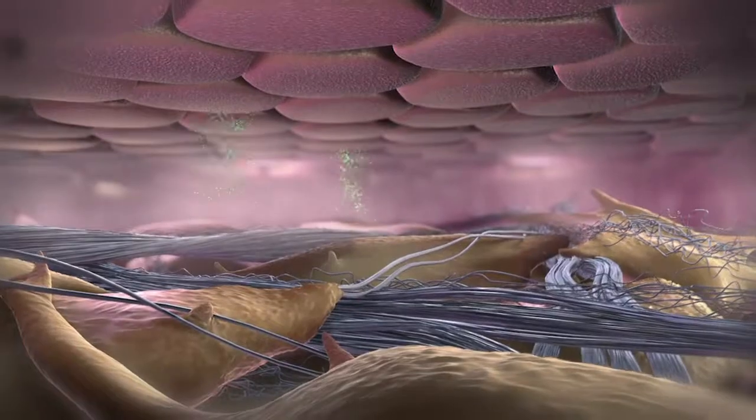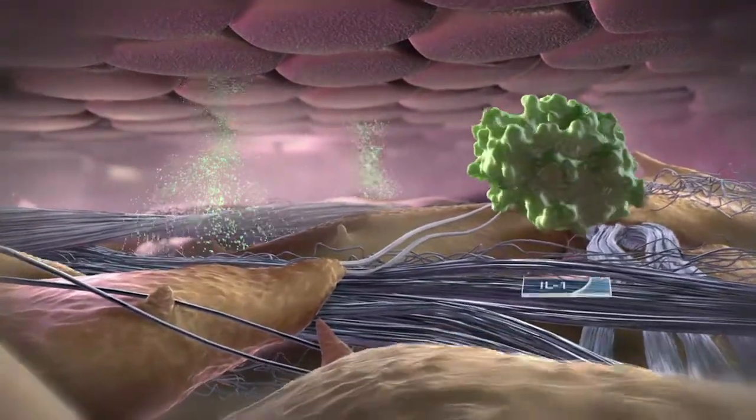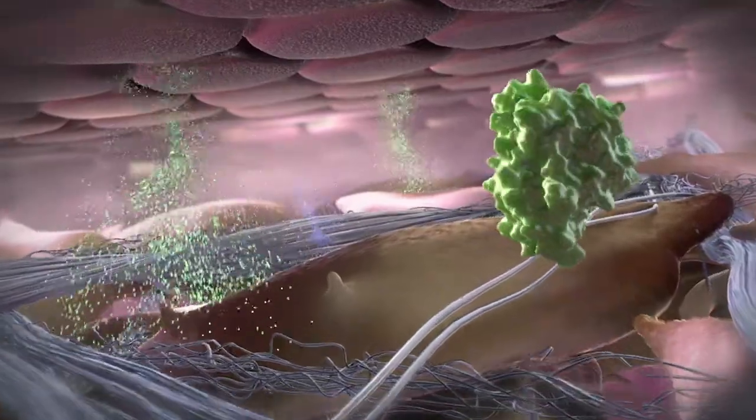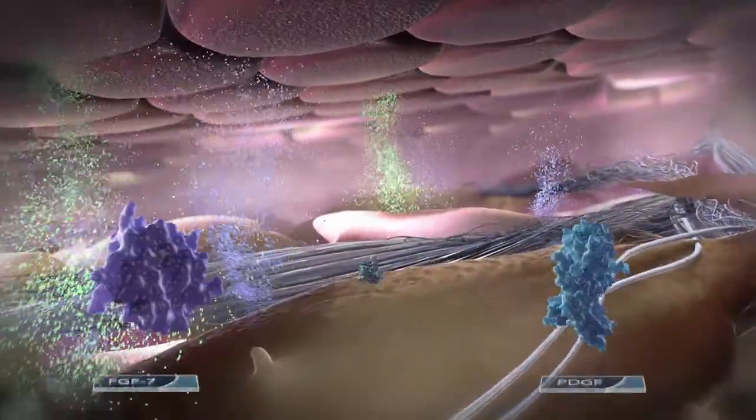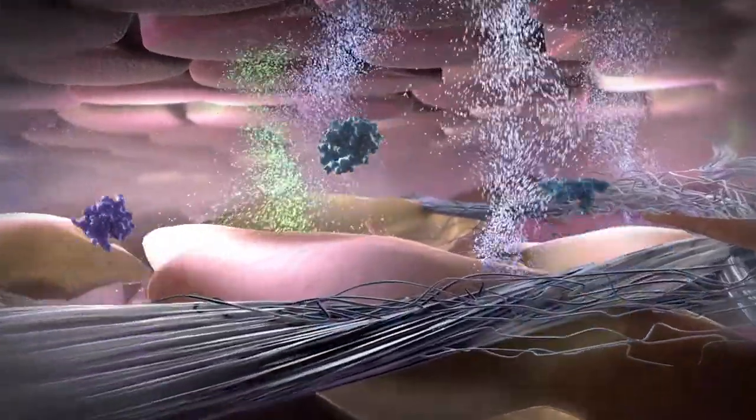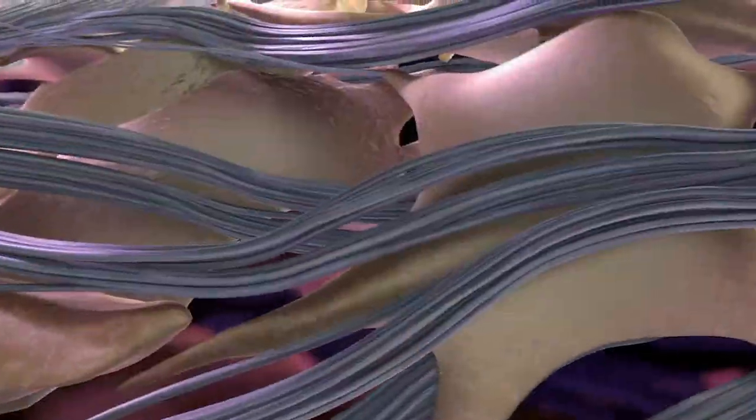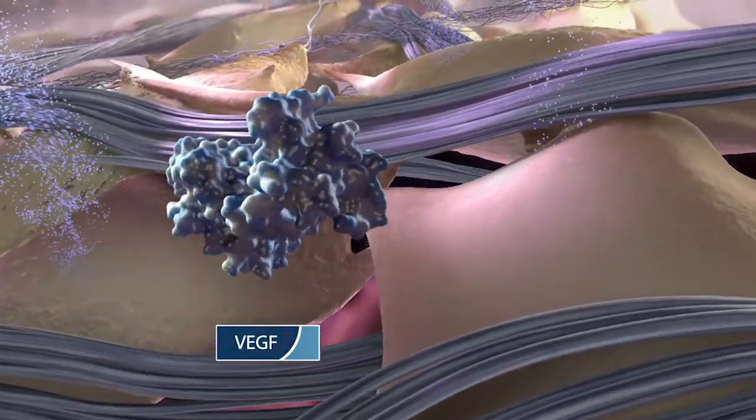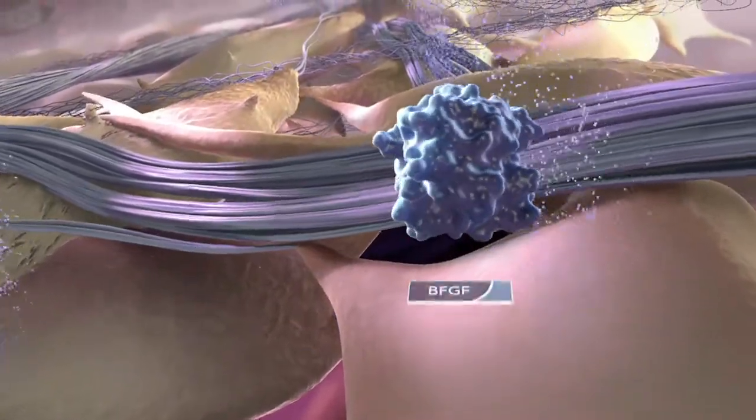Keratinocytes release many cytokines, including interleukin-1, to underlying fibroblasts. This synergistic activity produces growth factors and cytokines from fibroblasts that accelerate keratinocyte migration and proliferation, as well as angiogenic growth factors such as vascular endothelial growth factor and basic fibroblast growth factor.